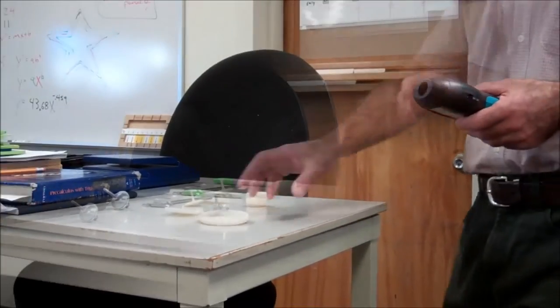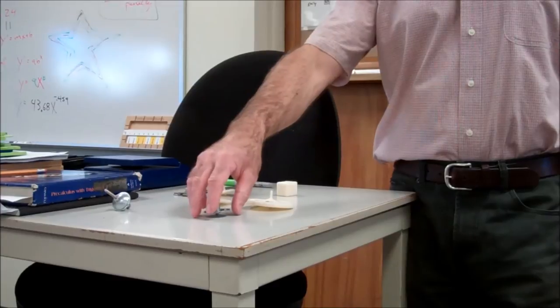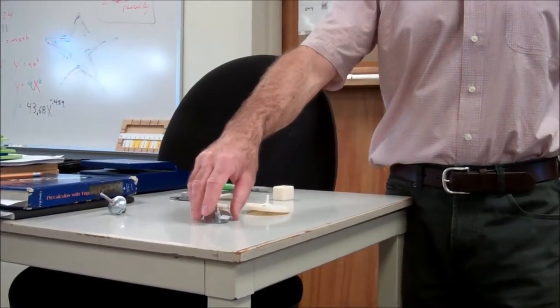That is 500 revolutions per minute. What are some of the variables that are going to affect how long the top spins for? Weight. Weight? Weight on the outside will make it spin longer too. Yep.